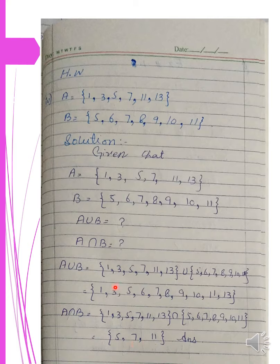Now, what have you done? When you do union, you combine all elements from all sets. If an element appears in both sets, like 5 in A or 5 in B, you only write it one time — not two times.